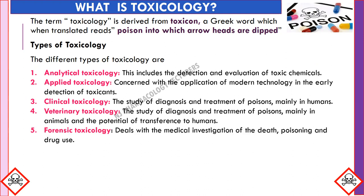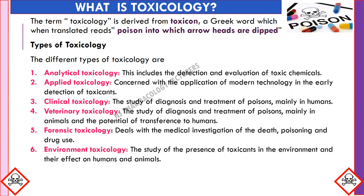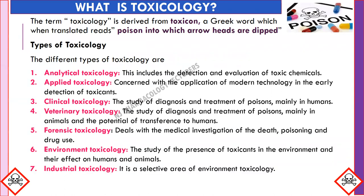Fifth is forensic toxicology, which deals with the medical investigation of the dead, poisoning, and drug use. Sixth is environmental toxicology, the study of the presence of toxicants in the environment and their effect on humans and animals. Seventh is industrial toxicology, a selective area of environmental toxicology.